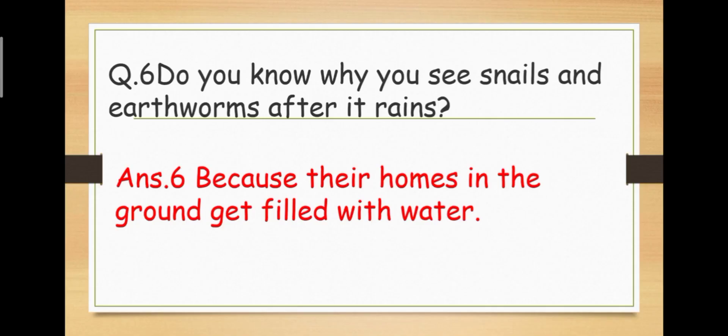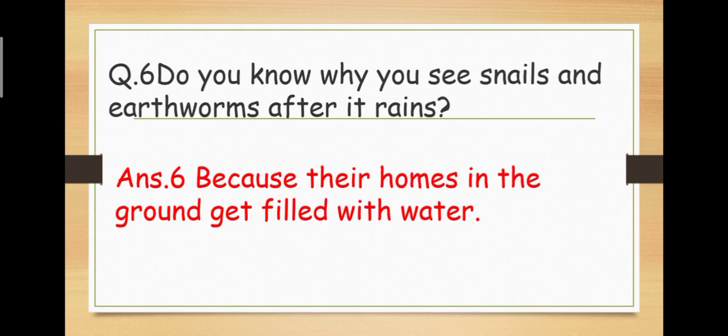Do you know why you see snails and earthworms after it rains? Answer. Because their homes in the ground get filled with water. Question 6. Why do you see snails and earthworms after it rains? Because snails and earthworms, they live inside the ground. But when it rains, they get filled with water. So they come out from there and we see them.